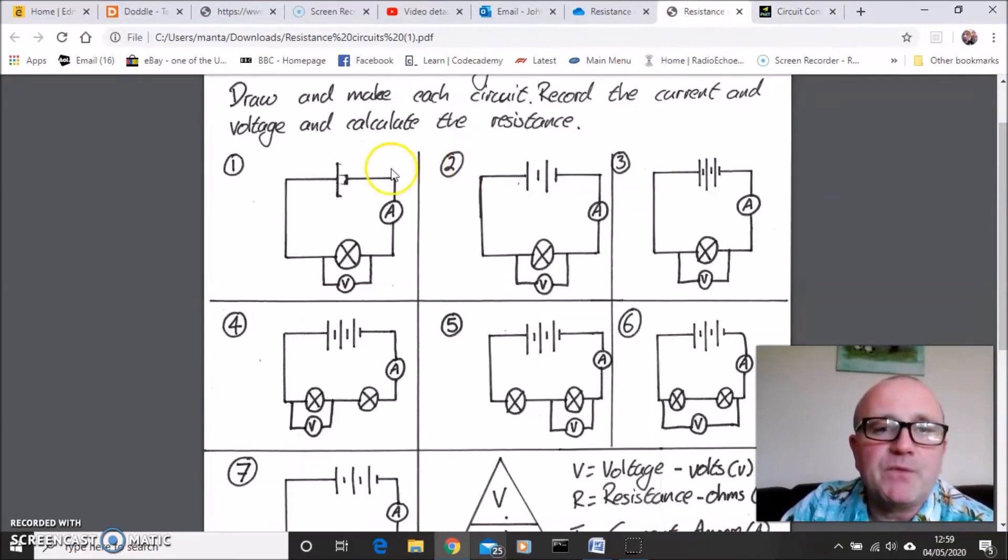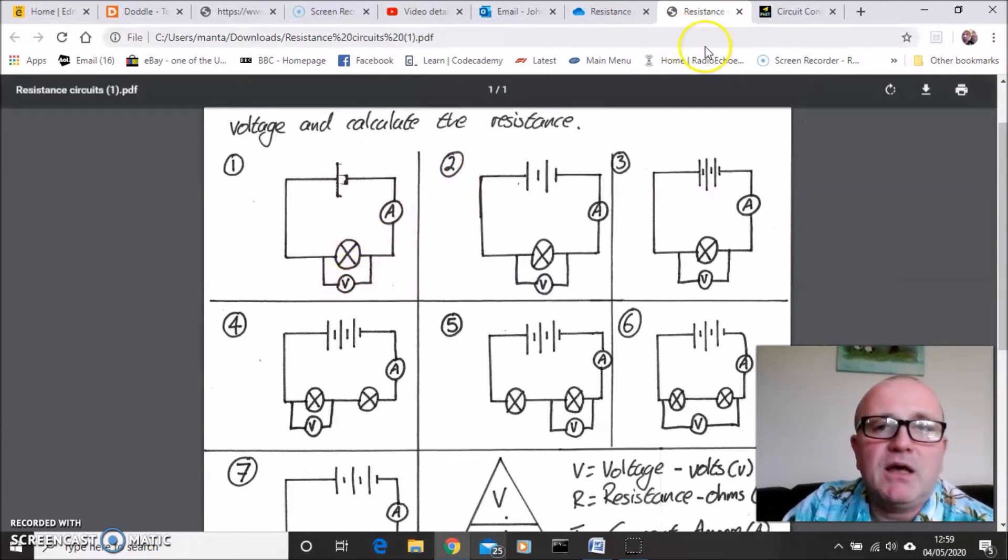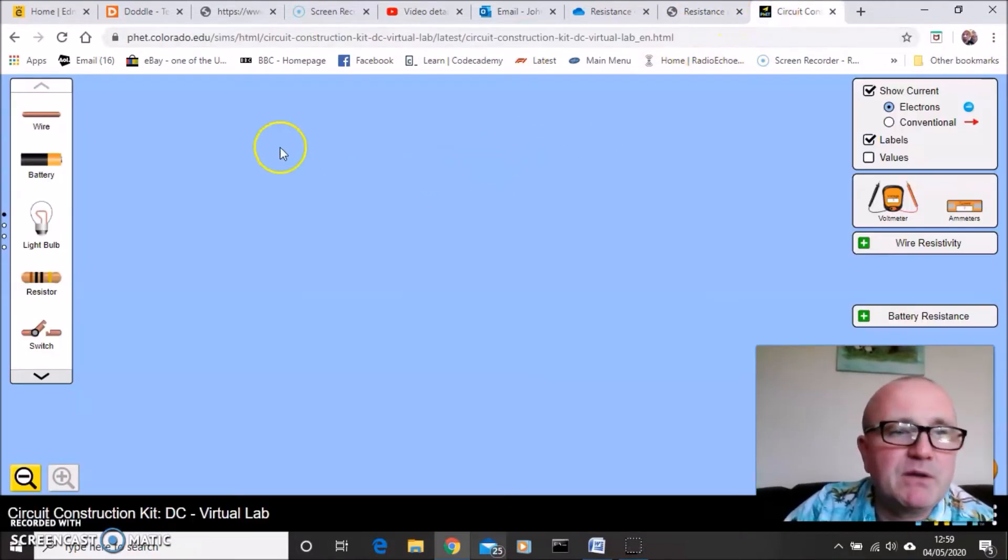You're also going to use that virtual lab that we've used a couple of times before as well. And if we have a little look at the first circuit, in the first circuit, I've got one cell, an ammeter, a bulb, and a voltmeter. So let's build my circuit.